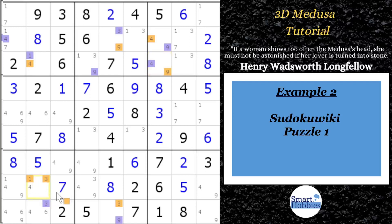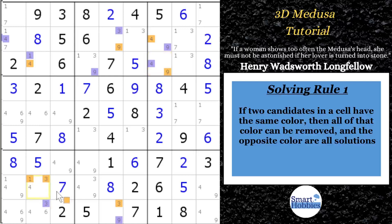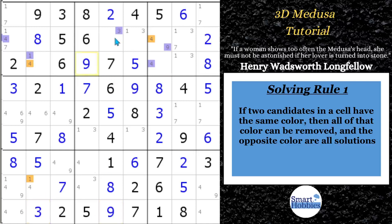This brings us to the first solving rule: if two candidates in a cell have the same color, all of that color can be removed and the opposite color are all solutions. Following the orange solve path, you'd need both a one and a three in this single cell — which can't happen. So we eliminate all orange and solve all the purple cells: three, nine, nine, three, nine, four, four, and one. This is a very powerful rule.